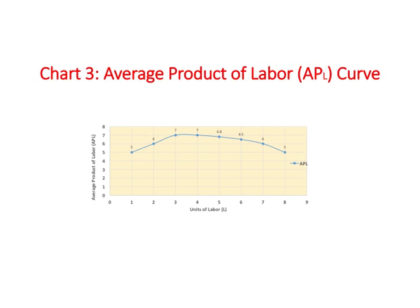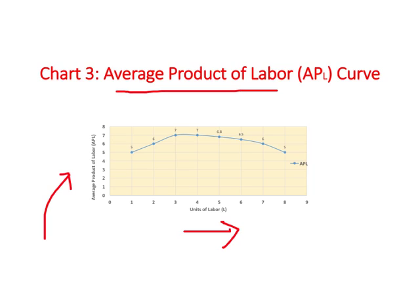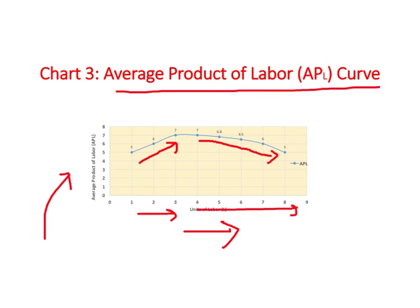In Chart 3, we have average product of labor on the vertical axis and number of workers on the horizontal axis. We simply take those average product of labor numbers, plot them onto the graph, and join them. What we find is that initially, when we hire workers, average productivity per worker increases, and as we hire more and more workers, average productivity starts to decline.